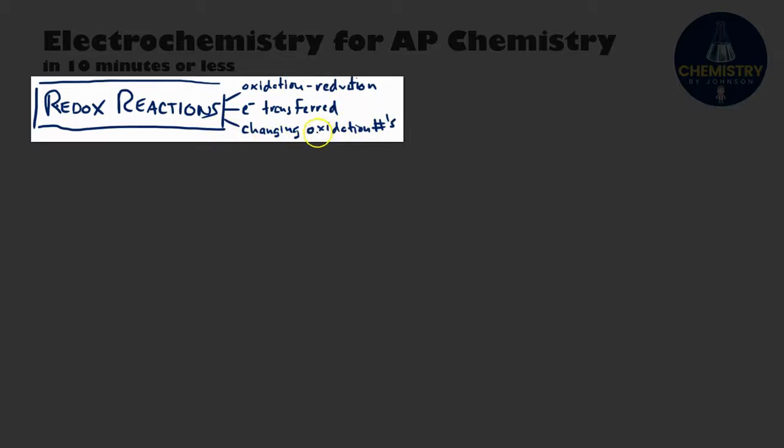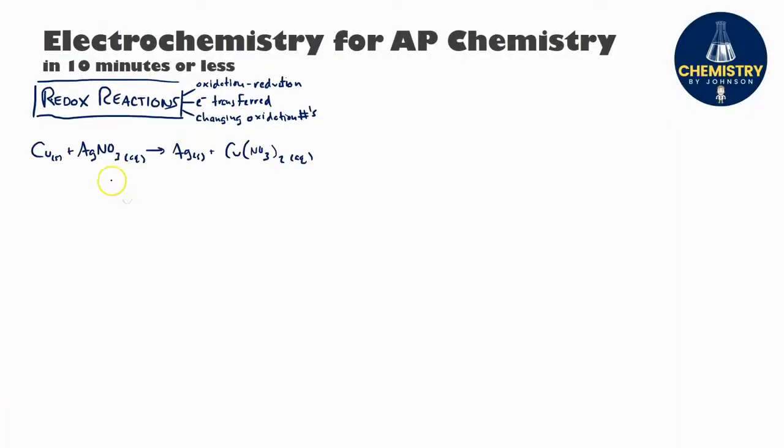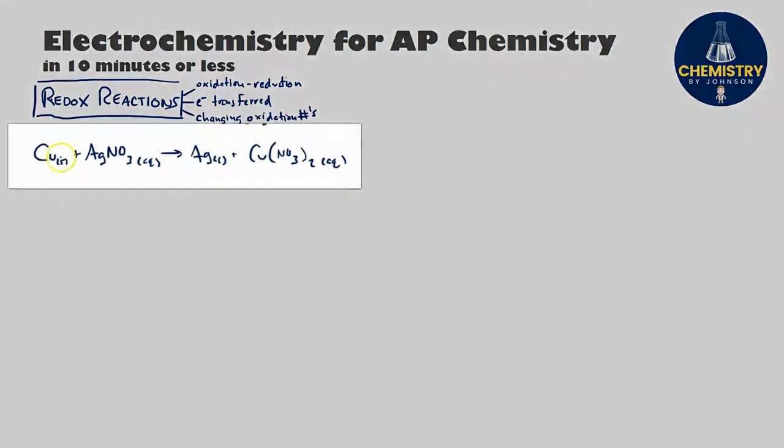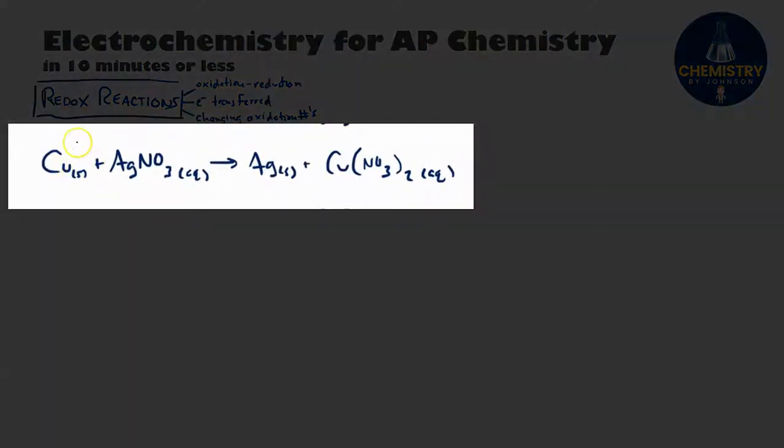Let's use this equation here to practice assigning oxidation numbers. You can quickly Google a set of rules for doing so. In those rules, you'll find that elements in their standard states like solid copper have an oxidation number of zero, same thing with solid silver. Elements that are ions have an oxidation number equal to their charge.